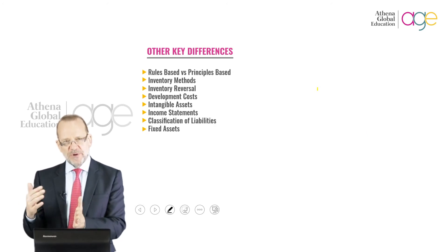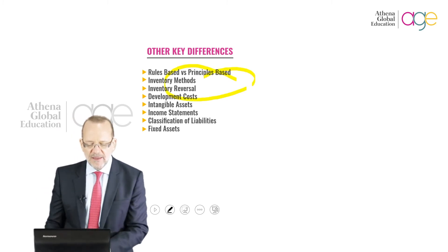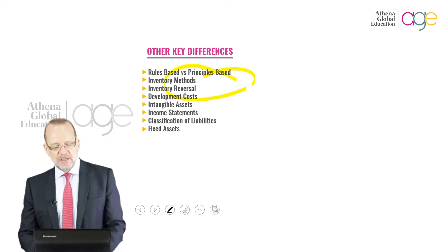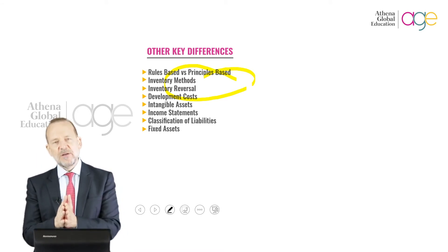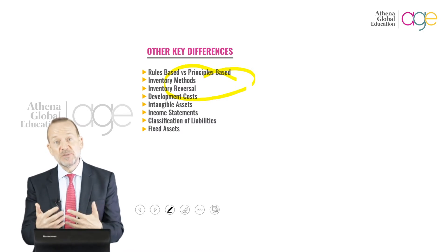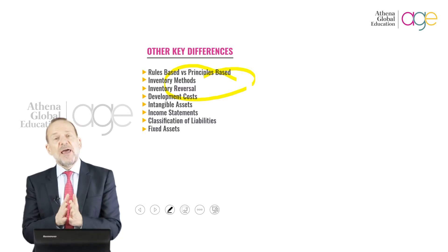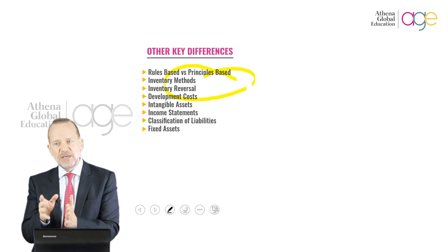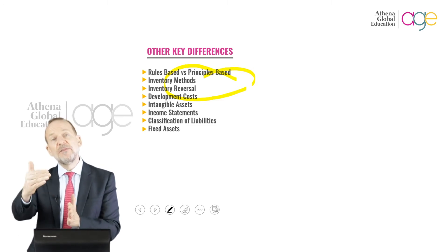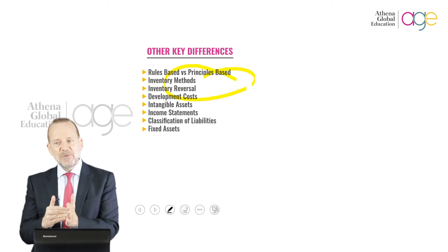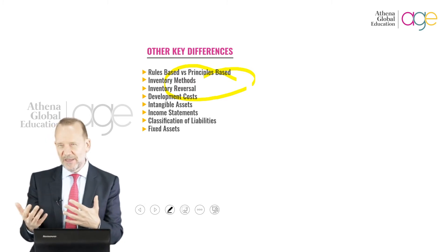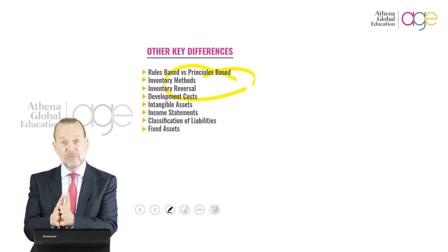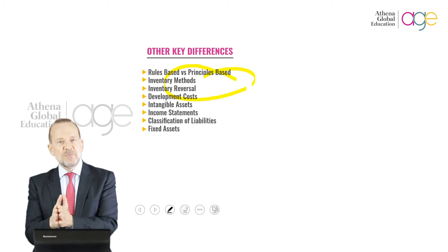Another key difference is rules-based versus principle-based, and I'd like to focus on that one because that is probably the key difference, having worked in both environments. When you think about financial statements, statutory reporting and regulation goes straight towards the concept of rules. There's a strict parameter of rules. GAAP, much like U.S. tax law, is very much rules-driven. It doesn't always pass what some folks would say is the logic test. It might not always make perfect sense to the user or preparer of the information, but it's rules-based.